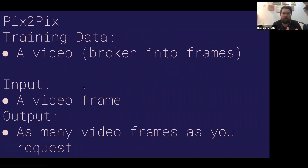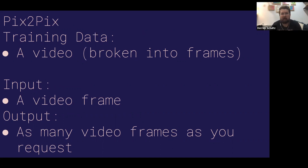The inputs for Pix2Pix for this are a video. Once you upload the video, you'll break it into frames using FFmpeg — there's actually a command written into the library that handles this. Then once it's trained, you input a single video frame.